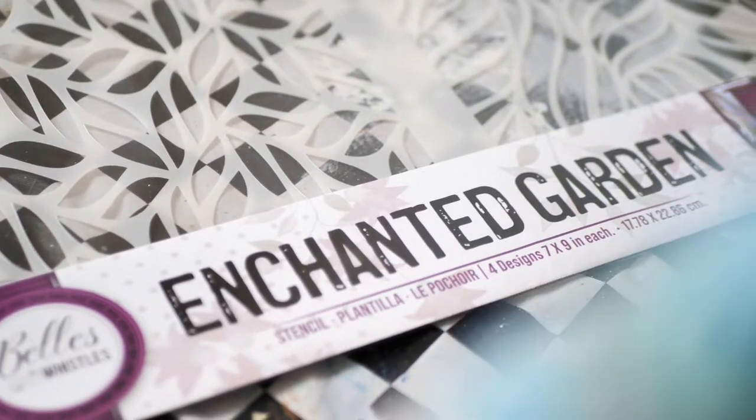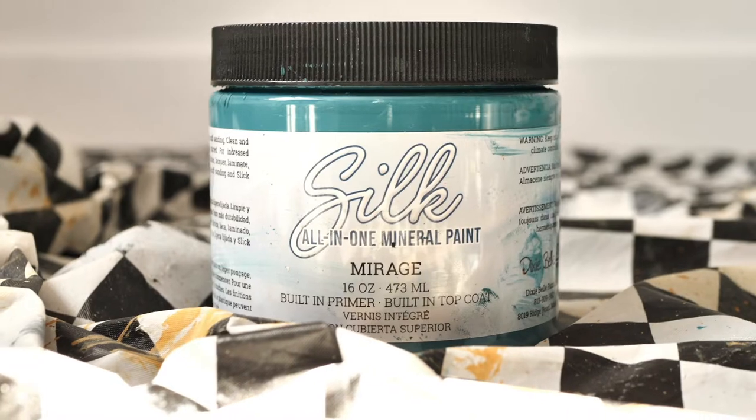All with the help of silk mineral paint, metallic paint, also a new stencil and some golden wax. As usual, we will be doing a little blending with these two gorgeous shades of silk paint, so let's get into it! Let's do it!